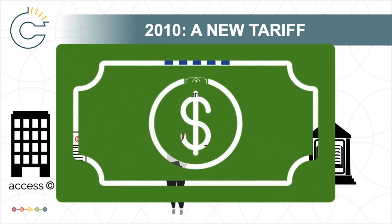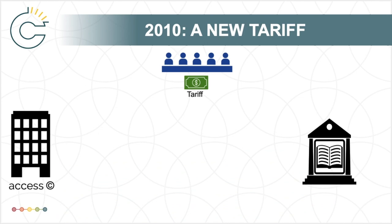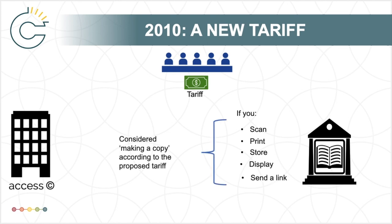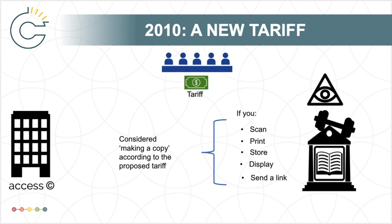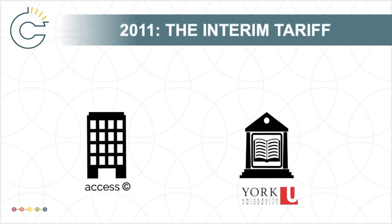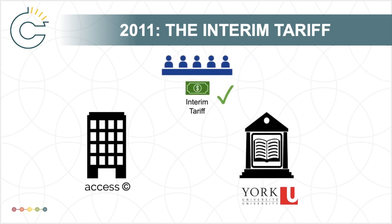Beyond the massive increase in fees, the proposed tariff created other concerns for colleges and universities. Particularly, it intended to expand into digital licensing, meaning that scanning, printing, storing, displaying, or sending a link to a work would be considered making a copy. Additionally, the new tariff contained numerous audit, reporting, and monitoring provisions that would place new burdens on institutions, their staff, and instructors. When license renewal negotiations between York University and Access Copyright languished, Access Copyright applied to the Copyright Board for, and was granted, an interim tariff. York briefly complied but then opted out, as many educational institutions did.